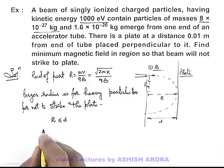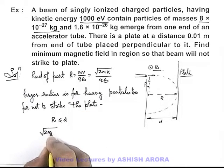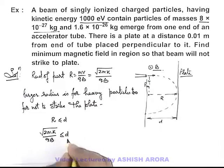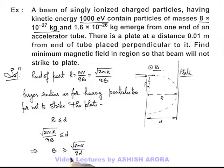Now in this situation we can write it as root 2mK by qB should be less than or equal to d. This implies we are getting the value of magnetic induction should be more than or equal to root 2mK by qd. This is the minimum value of magnetic induction which is needed here.